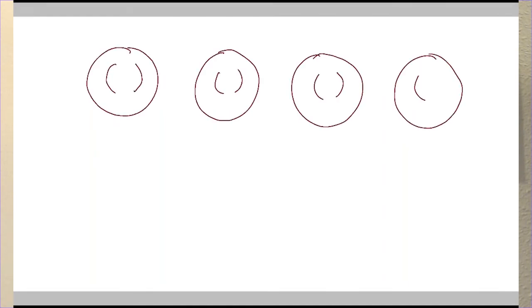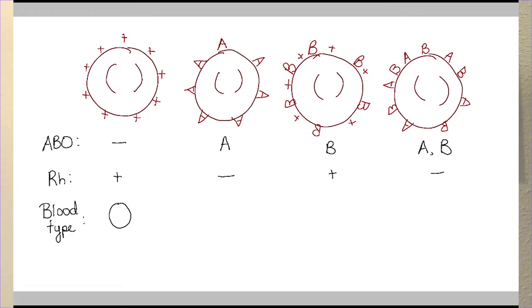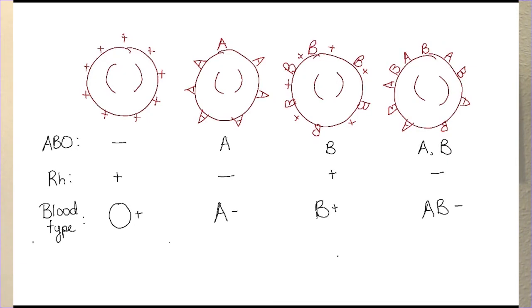Let's watch a quick video on how to determine blood type. I draw four red blood cells with a variety of potential antigens or tags on the surface. We'll break it down first by looking at the ABO gene: if there is an A tag, I'll write A; if there is a B tag, I'll write B; and if there is no A or B, then the type is considered O. For the RH antigen, you either have a plus — that's RH positive — or you do not, in which case you are considered negative. Your blood type is a combination of both the ABO and RH characteristics.